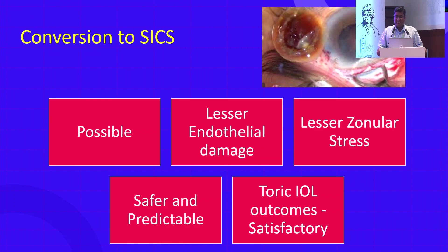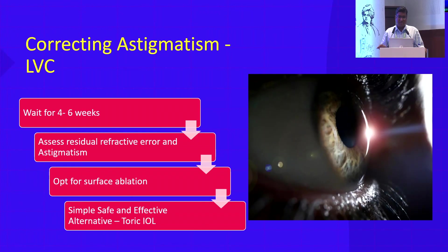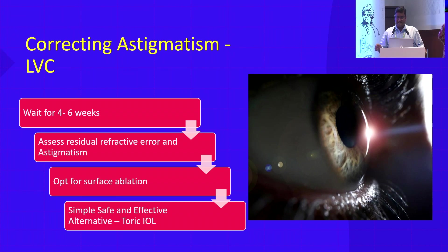There is lesser endothelial damage, lesser zonular stress, and it is safer and more predictable. Toric outcomes are satisfactory but not fully up to the mark, because you don't always know how the wound is going to heal and what the patient will end up with. My recommendation is: don't do a toric IOL. Instead, finish your surgery in the safest way possible with a monofocal IOL, then go for laser vision correction. Wait four to six weeks, assess the residual refractive error and astigmatism, and opt for surface ablation — a simple, safe, and effective alternative to a toric IOL in cases with multiple issues.